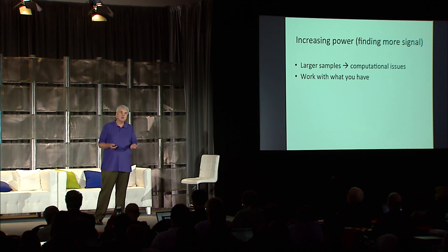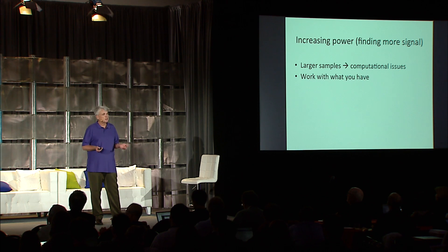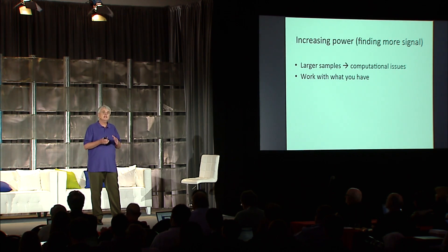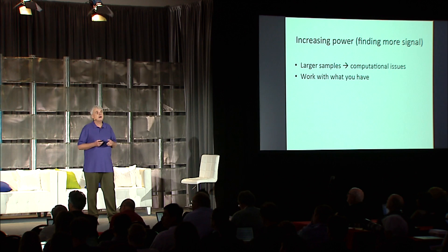One very obvious way to increase power is to increase your sample size. And when you do that, there are computational issues, big data issues, and so forth. One of the examples we'll talk about is taking an algorithm that before was completely intractable to apply to data sets of the size that we see in association studies and showing how we made it feasible. Another example of increasing power is a situation where you have the data that you have, and we'll talk about a general trick to help you get more power out of that data.